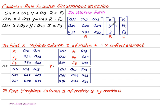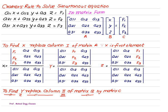Since y is the second element, we replace the second column of matrix A with [f1, f2, f3], keeping columns 1 and 3 the same. The denominator is the determinant of matrix A. For z, the third element, we replace the third column with [f1, f2, f3], keeping the rest the same — the denominator is again the determinant of A. So to find x, y, and z, we replace the first, second, and third columns respectively, and the denominator is always the determinant of A.